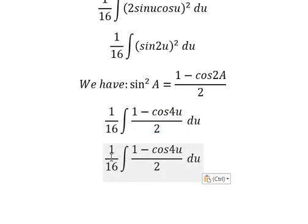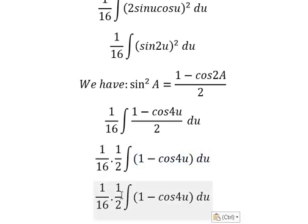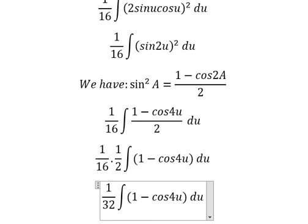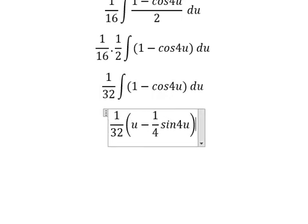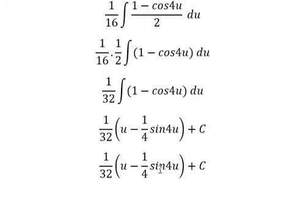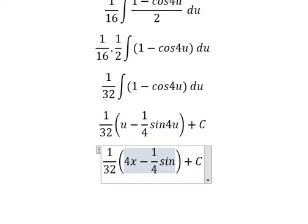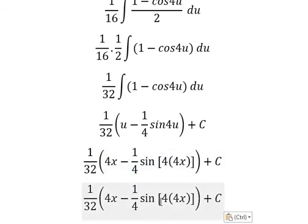The 1/2 goes outside to give 1/32 ∫(1-cos4u) du. Now we have the final answer: 1/32(u - 1/4 sin4u) + C. Substituting u = 4x back in, we get 1/32(4x - 1/4 sin[4(4x)]) + C, which equals 1/32(4x - 1/4 sin16x) + C.